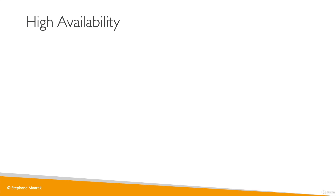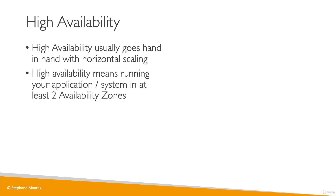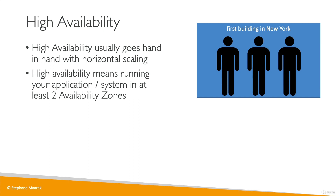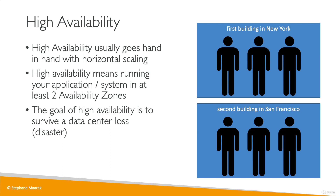Now let's talk about high availability, which goes hand in hand with horizontal scaling. High availability means that you are running your application and system in at least two availability zones on AWS. For our call center, that means we have a call center in New York and maybe a second call center in San Francisco. If one of these call centers is down — say there is a power outage in New York — then we can still take calls in San Francisco. San Francisco will be more busy, but we are at least surviving the disaster. So in AWS, you use two availability zones, and the goal is to survive a data center loss or disaster.